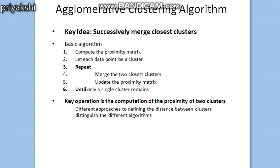Welcome to this video tutorial on hierarchical clustering. In the previous class we discussed agglomerative hierarchical clustering. The basic algorithm assumes each data point to be a single cluster, and after computing the proximity matrix we repeat the process until we get a single cluster — merging the two closest clusters and updating the proximity matrix each time.